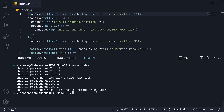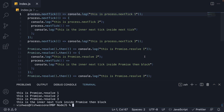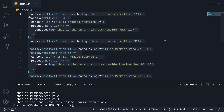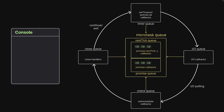Let me know in the comments if you got this right. We are going to rely on a visual explanation. When the call stack executes all 6 statements, there are 3 callbacks in the nextTick queue and 3 in the promise queue. There is no further code to execute and control enters the event loop. As we know, the nextTick queue gets priority.